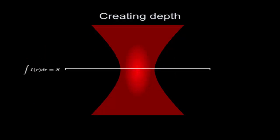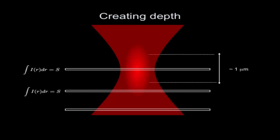Light focused to such a small spot doesn't materialize out of nowhere - the light first has to travel to the spot to be condensed, and then it diverges again. The light is everywhere: below, here, and above. It's just more concentrated in the middle. If you take any slice along that cone, the number of photons traveling through that slice is the same - they're just distributed over a larger or smaller area.